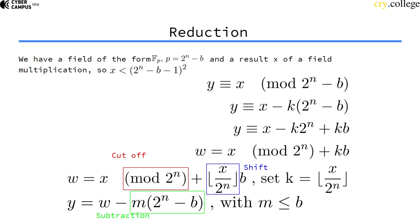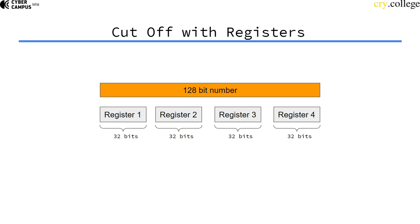But they become even cheaper if you think about how the computer actually handles big numbers. So imagine I have a computer that has a 32-bit architecture. So its registers are 32 bits wide. But the large number that you want to work with is 128 bits large.